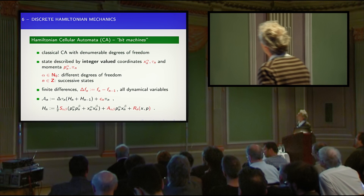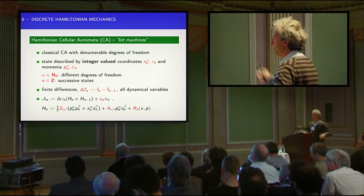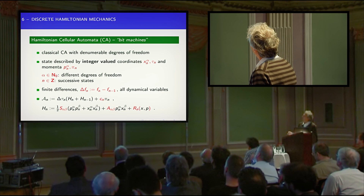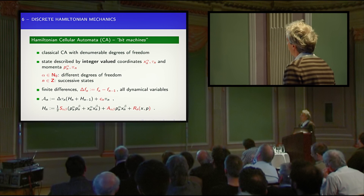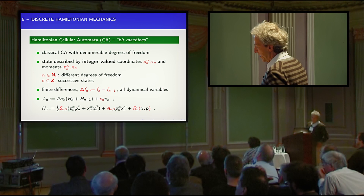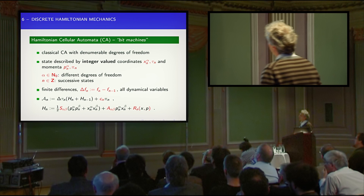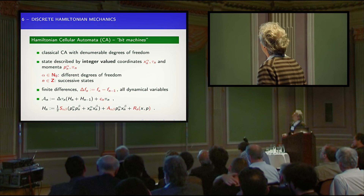What is the cellular automaton? I talk about cellular automata with a finite or denumerable number of degrees of freedom, which are described by nodes sitting in an abstract space. These nodes carry coordinates and momenta. I explicitly separate the spatial coordinates from the time coordinate — this makes it a non-relativistic approach. Alpha denotes different degrees of freedom, a natural number. N denotes successive states of the automaton, replacing our notion of time. There is an intrinsic clock in this thing — that's actually why I call them bit machines. Everything in this chapter is about integer numbers; there are no real numbers anywhere.